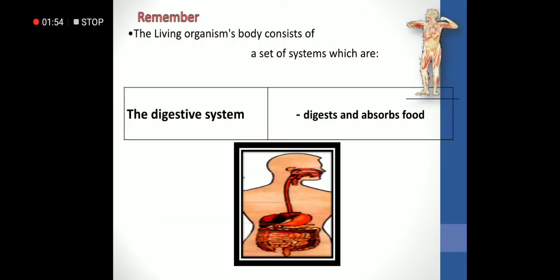The living organism's body consists of many systems: digestive, respiratory, urinary, and circulatory. The first system we will study is the digestive system, and its function is to digest and absorb food.